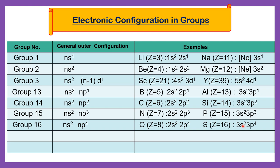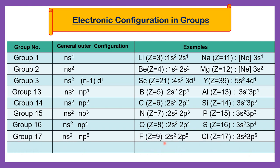Group number 17 has general outer electronic configuration ns2 np5 — p orbital containing 5 electrons. For example, fluorine has outer electronic configuration 2s2 2p5. Another example of group 17 is chlorine, with 3s2 3p5 — s subshell containing 2 electrons, p subshell containing 5 electrons. Both contain 7 valence electrons total.